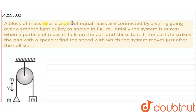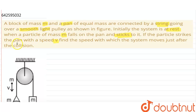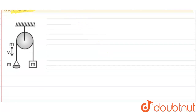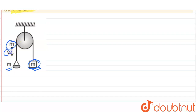A block of mass m and a pan of equal mass are connected by a string going over a smooth light pulley as shown in the figure. Initially the system is at rest. When a particle of mass m falls on the pan and sticks to it, if the particle strikes the pan with speed v, find the speed with which the system moves just after the collision. So this is the diagram: a block of mass m, a pan of mass m, and a particle of mass m falling with velocity v.